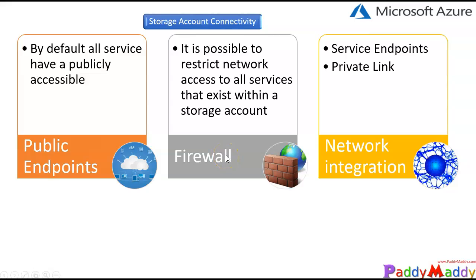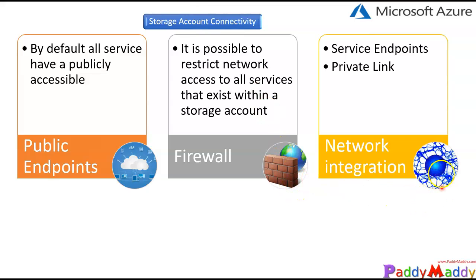The second option is firewall. You configure a firewall in between, and your storage account sits behind it. The connection first hits the firewall, and if there's a firewall rule to allow it, it goes through to your storage account. This is a more secure way of configuring your storage account.